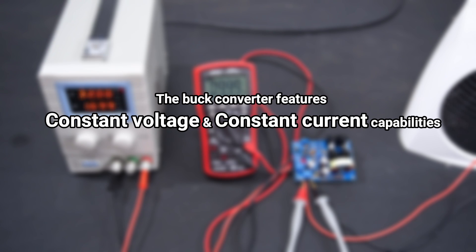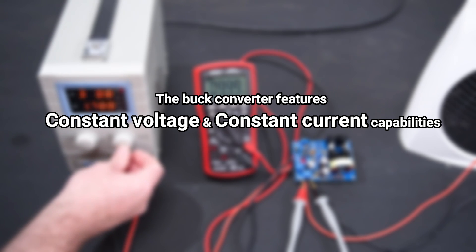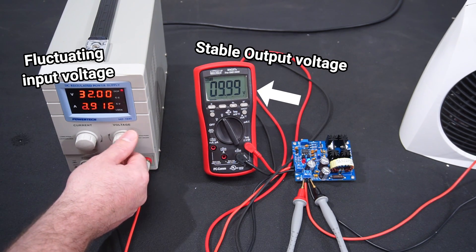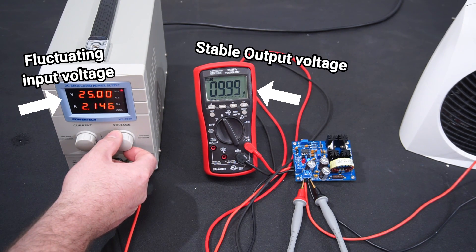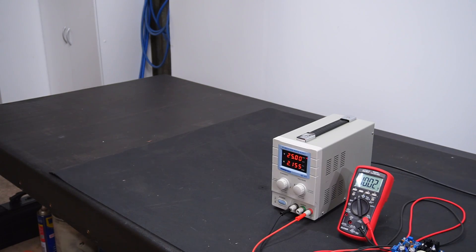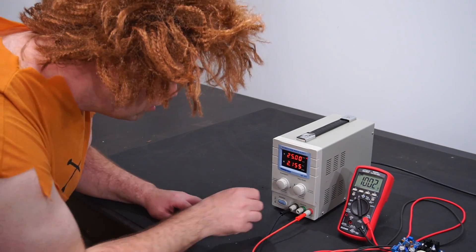The buck converter features constant voltage and constant current capabilities. Constant voltage means that the output voltage is stable even if the input voltage fluctuates. Even if the voltage fluctuations are caused by a really annoying caveman fiddling with things he really shouldn't be touching.